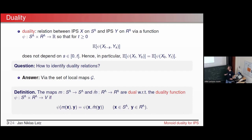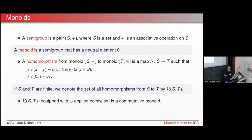The idea is that with such a relation we can define both processes via the same graphical representation, via the same Poisson point process, so that this duality relation holds. To find these dual maps we put some additional structure onto the local state space — this finite set S — and for this we introduce monoids. Monoids are simple objects: just semigroups, a set equipped with an associative binary operation and a neutral element, usually denoted zero.